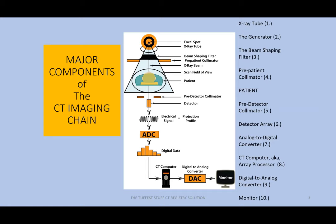The only one not represented diagrammatically would be the generator. But things begin at the top at the X-ray tube, progress to the generator, then to the beam shaping filter, the pre-patient collimator, and we have room for the patient where attenuation takes place, the pre-detector collimator, the detector array, the analog to digital converter abbreviated ADC, the CT computer also known as the array processor. Finally, the last two components: the digital to analog converter, and then the monitor, which we use to visualize CT imaging.